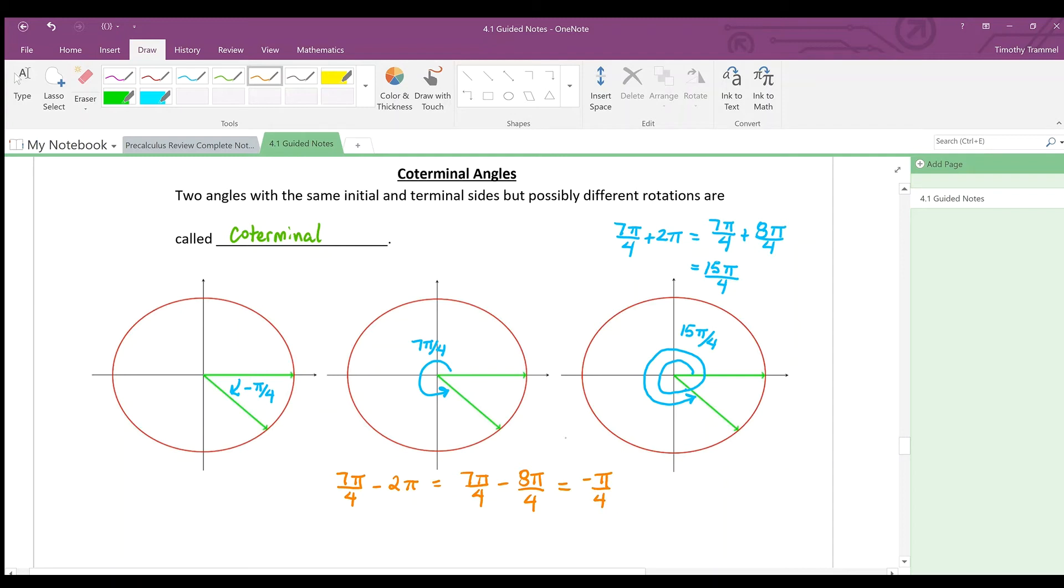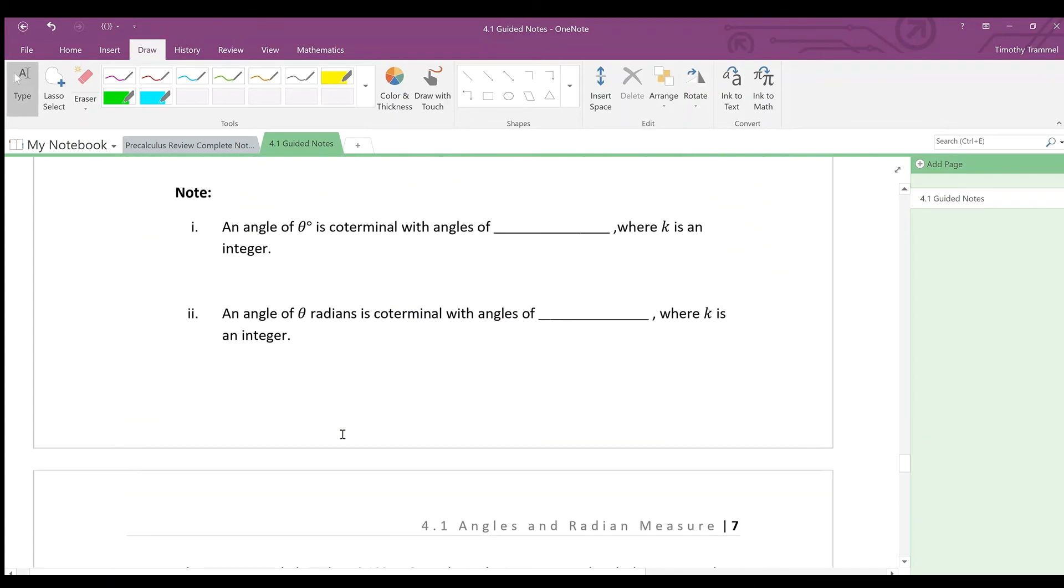So, we can really get coterminal angles of another angle by just adding revolutions or taking revolutions away. So, adding or subtracting multiples of 2π. And if we were in degrees, this would be adding or subtracting multiples of 360 degrees.